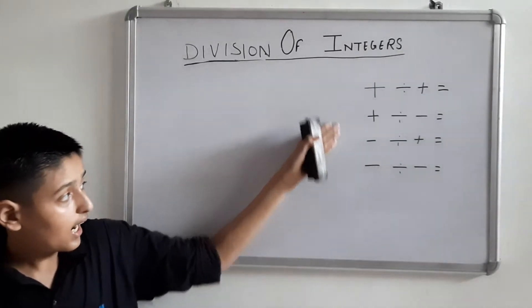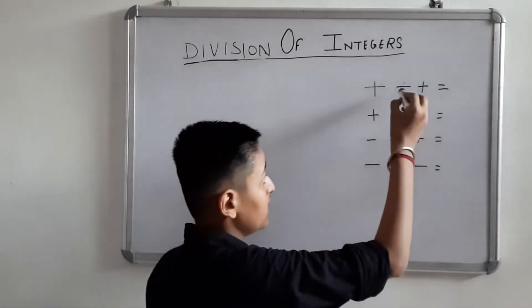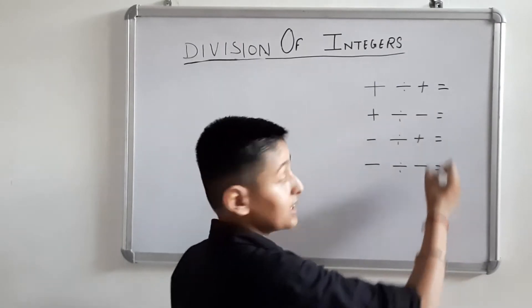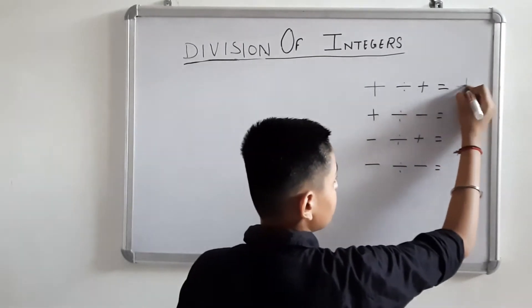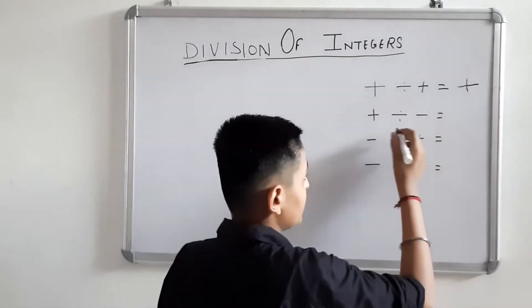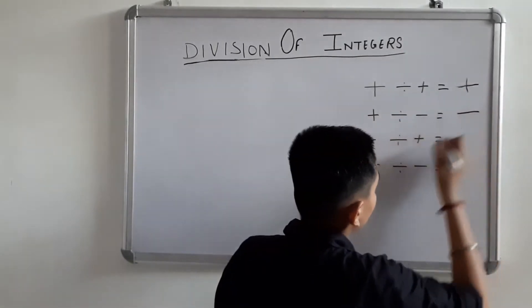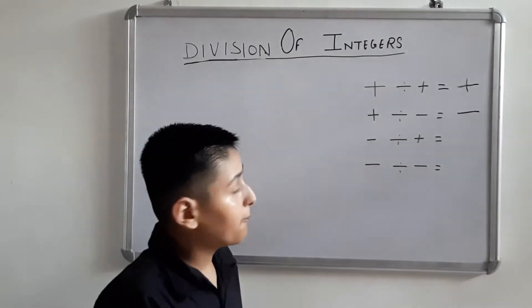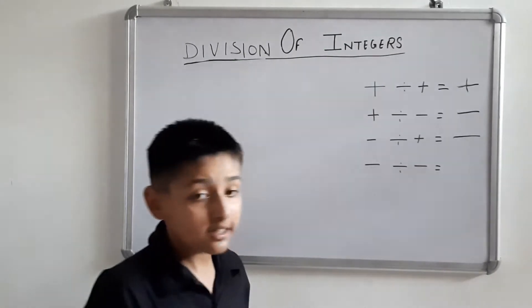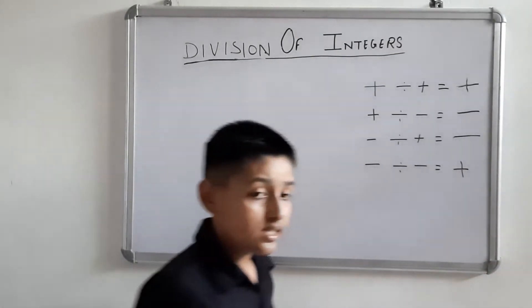There are some rules of division. They are same like multiplication but only signs are changed. Plus divided by plus is plus. Plus divided by minus equals minus. Minus divided by plus is minus. And minus divided by minus is plus. These are simple rules.